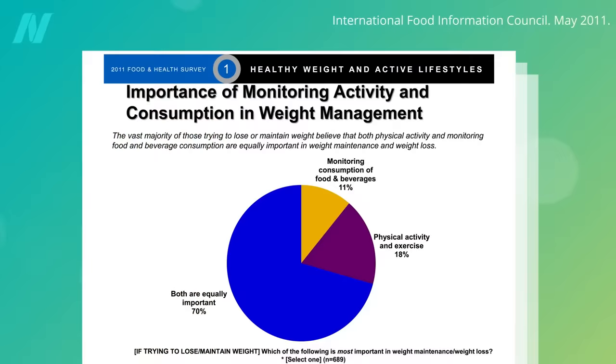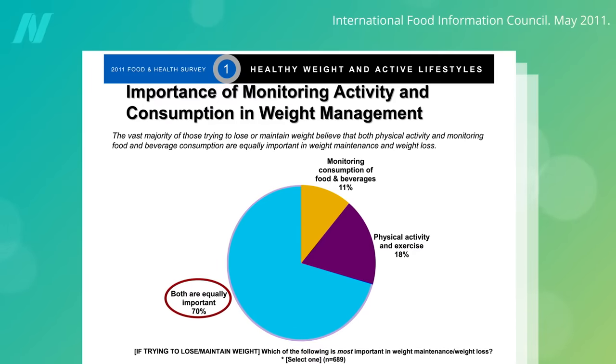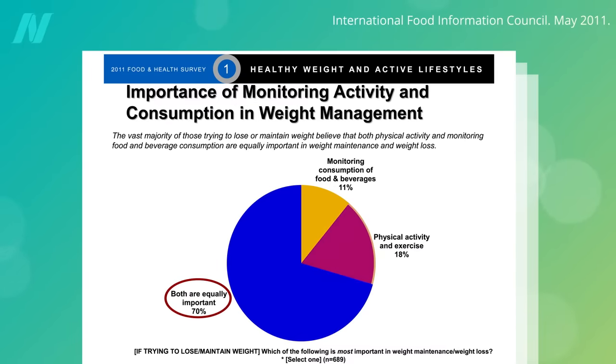A national survey found that a vast majority of Americans trying to control their weight believed that food and beverage consumption and physical activity were equally important. 7 out of 10 went with equally important, about 2 out of 10 thought exercise was more important, and only 1 out of 10 chose diet. The vast majority of Americans are wrong.